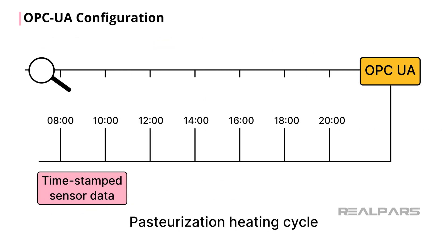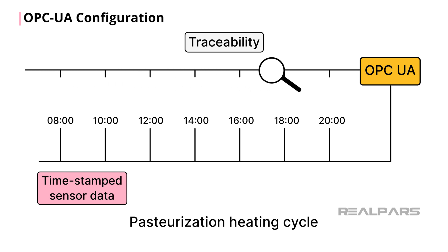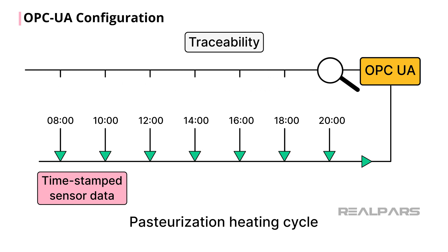A key regulatory requirement is traceability. The power of OPC UA to collect and timestamp each piece of sensor data can be used to track the exact pasteurization heating cycle, which would be beneficial in quality audits or should a recall become necessary.